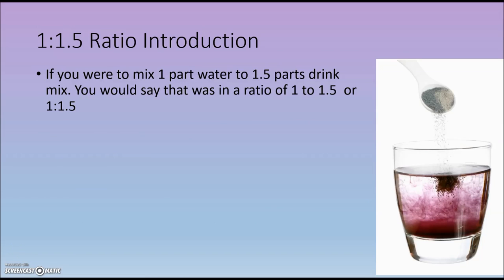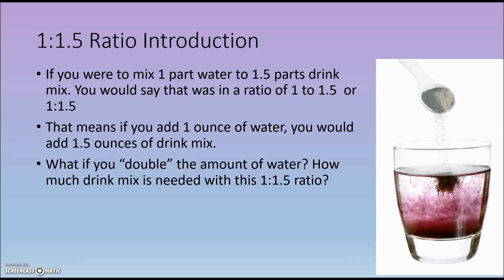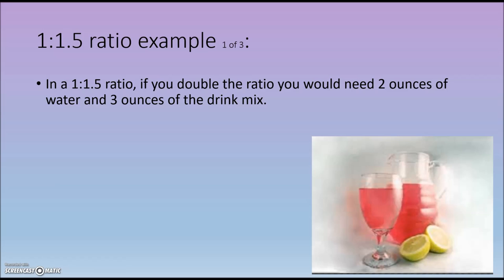Looking at the 1 to 1 and a half ratio: if you were to mix 1 part water to 1.5 parts drink mix, you would say that it was in a ratio of 1 to 1 and a half. That means if you add 1 ounce of water, you would need 1.5 ounces of drink mix. What if we double the amount of water? How much drink mix is needed to maintain the 1 to 1 and a half ratio? If we double the amount of water to 2 ounces, we'd need 3 ounces of drink mix.